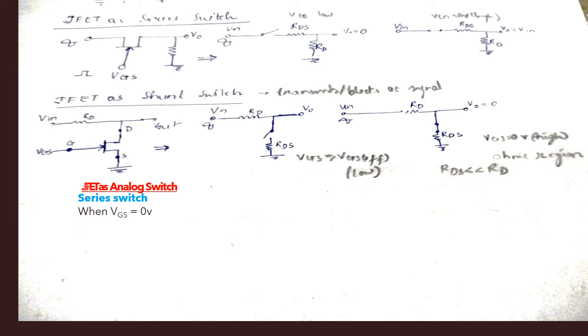This is the circuit diagram. When VGS is 0 volt, the switch is closed. The FET is on, and we can say that the output voltage is approximately equal to VIN.